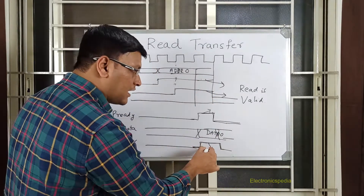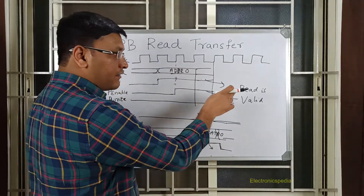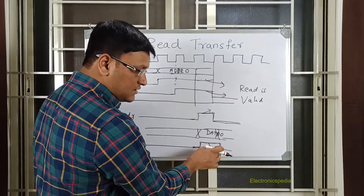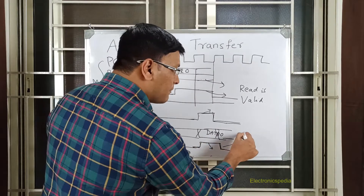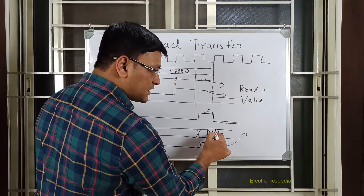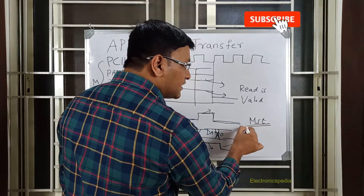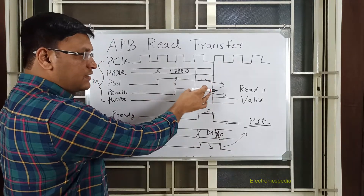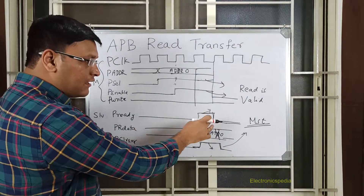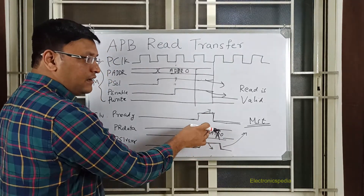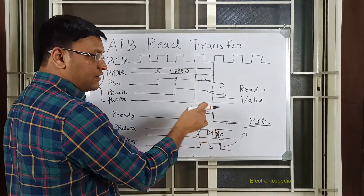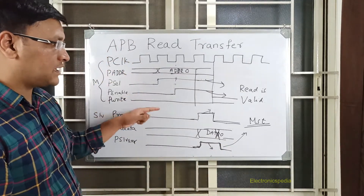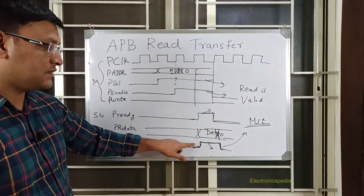This slave error also has to be in this window only - that means during this window when PSLVERR is asserted while all of these signals are high. So even though the read transaction is a valid transaction, the slave has chosen to assert an error response. That means the read data has to be discarded by the master. The master can take it, but the slave cannot guarantee it's proper data. If the master considers this data based only on PENABLE, PSEL, and PREADY, the slave cannot guarantee it's proper data because it has already asserted an error response.